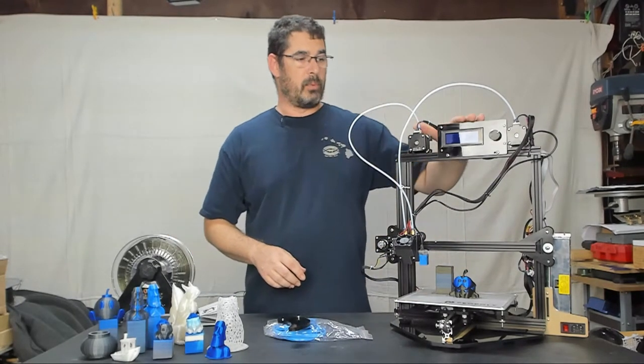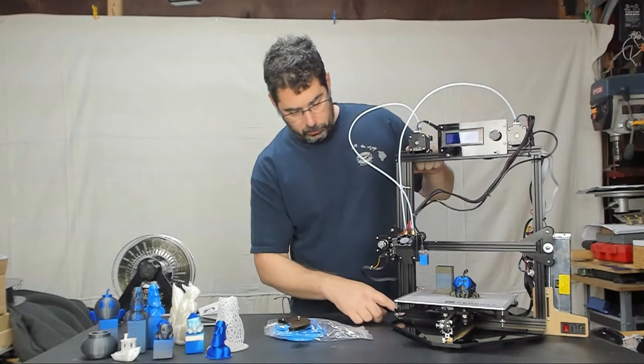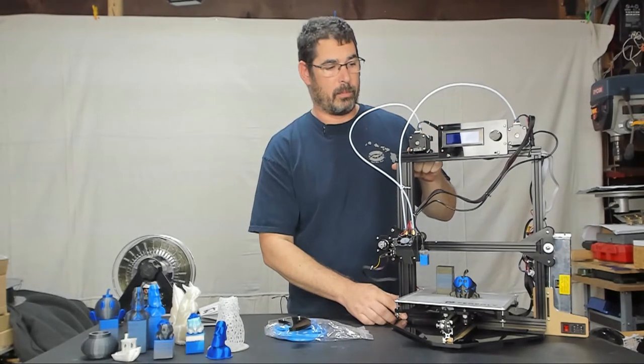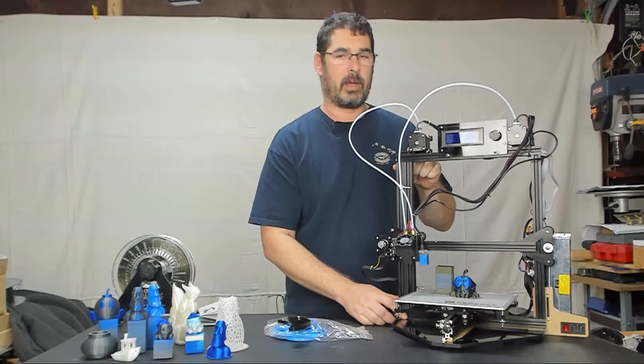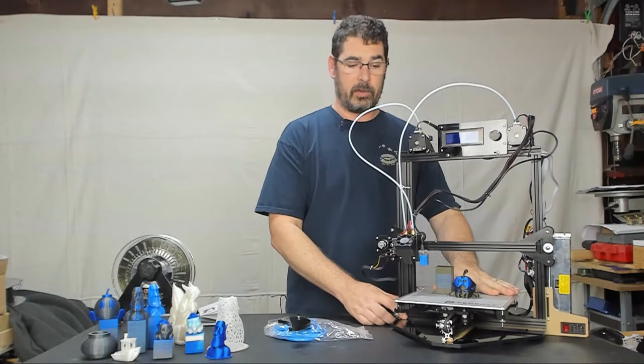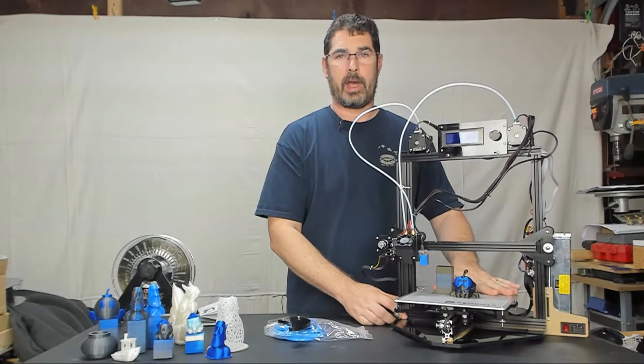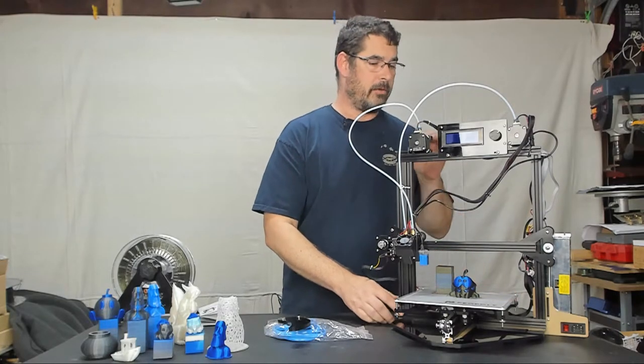As I mentioned, you can print a bracket. You could also very easily print a couple of support brackets to eliminate this wobbling that I'm talking about here. And you could very easily print a bracket to go under the Y here to add those eccentric spacers. Very minor things.